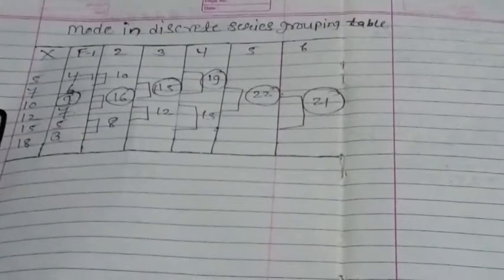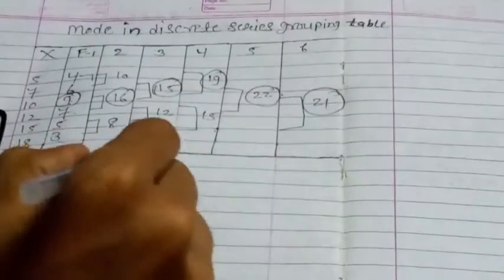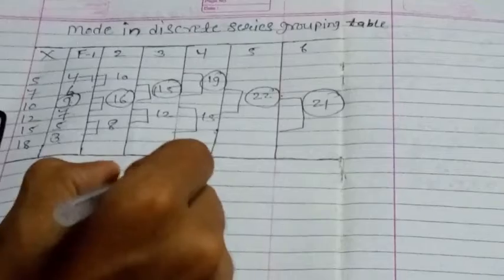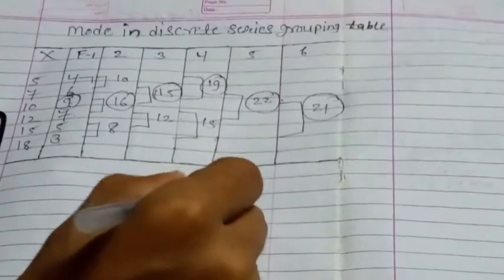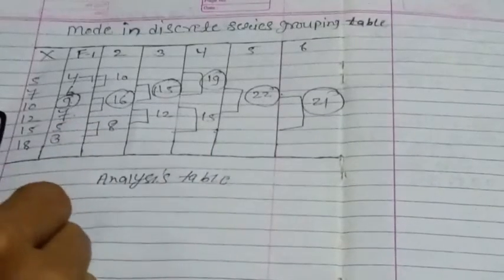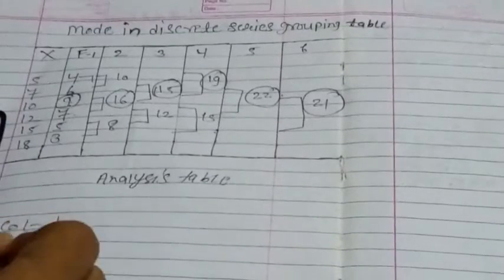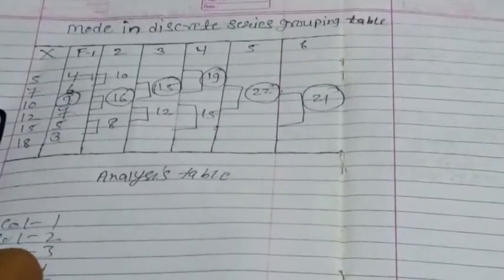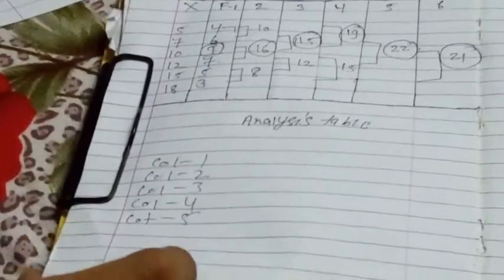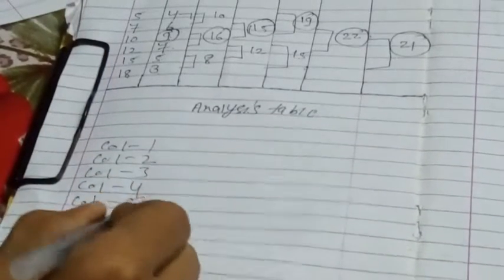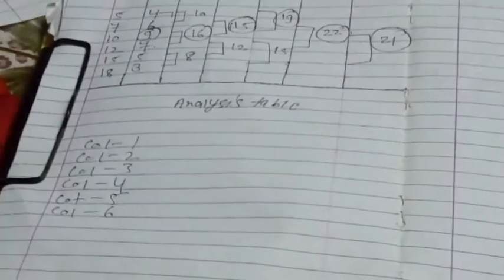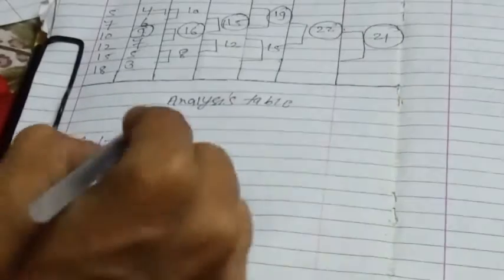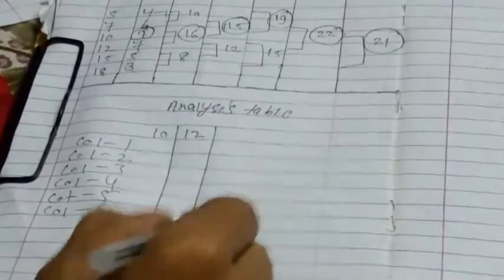This is not the end of the question. We have to make an analysis table with columns 1, 2, 3, 4, 5, and 6.